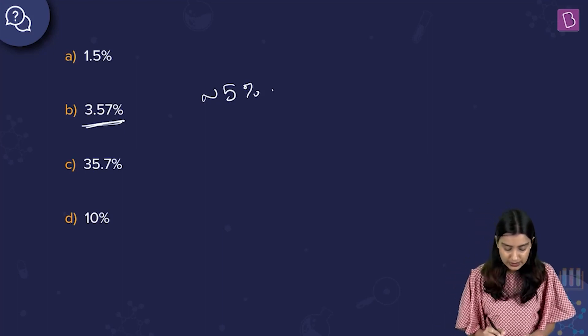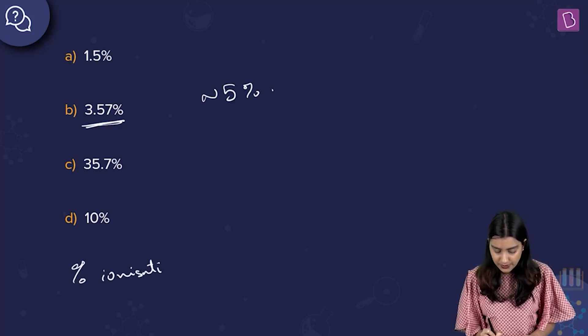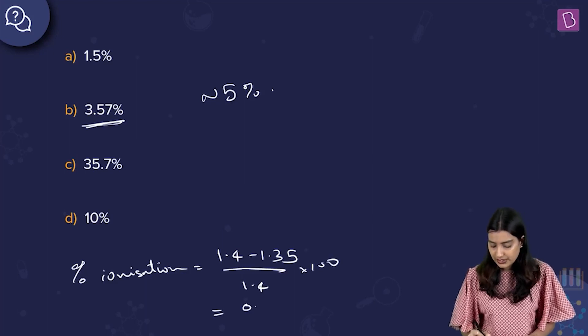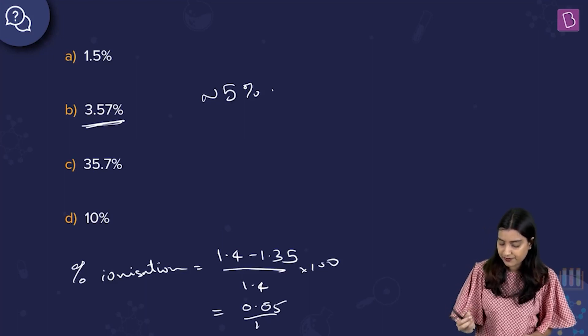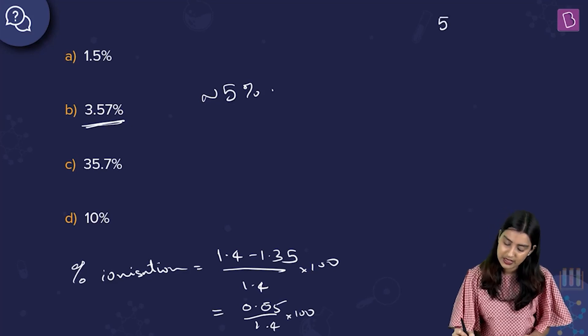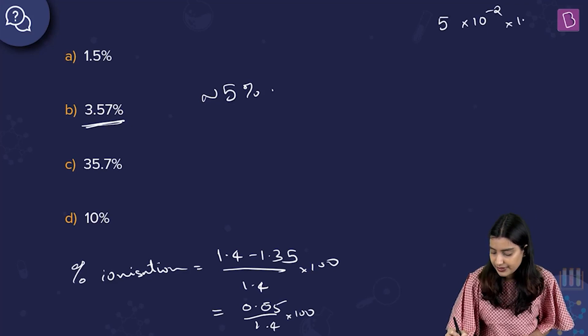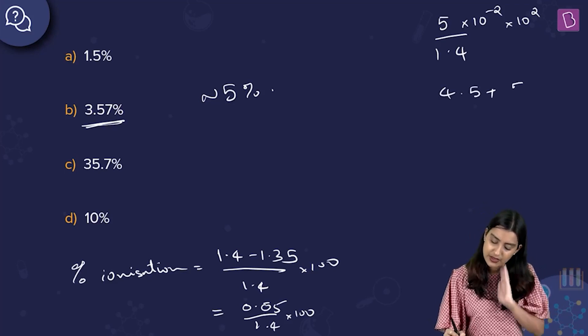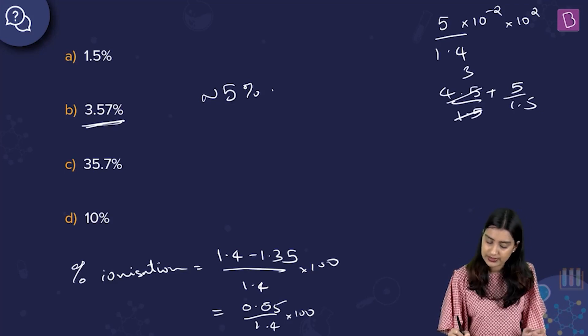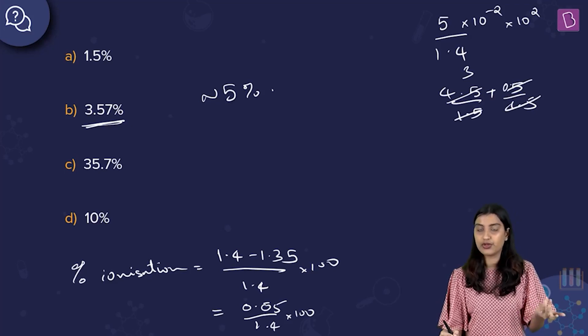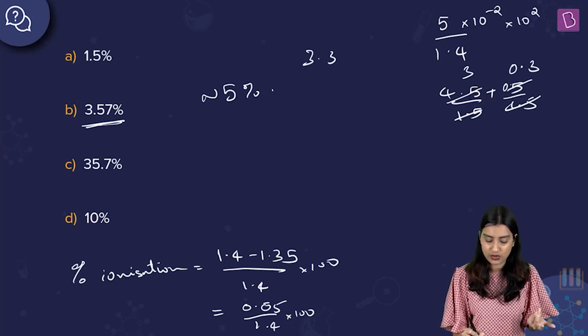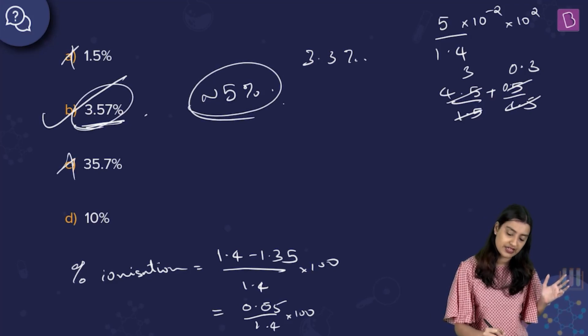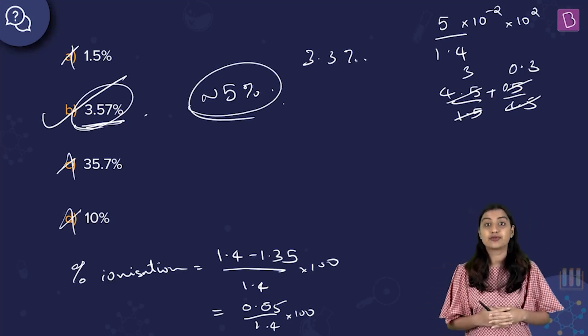If you are still confused, what you could do is you could write percentage ionization is equal to 1.4 minus 1.35 divided by 1.4 into 100. So basically, you have 0.05 divided by 1.4 into 100. That's 5 into 10 to the power of minus 2 into 10 to the power 2 divided by 1.4. This is nothing but 5 by 1.5, something like that. Basically, 4.5 plus 5 by 1.5, so that's 3. And this will be around 0.3. So 3.3% is what I'm looking at, roughly. And you can see why I took around 5% and why option B is the closest. Right answer here is going to be option B, 3.57%.